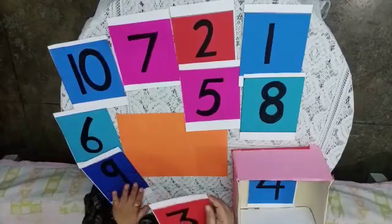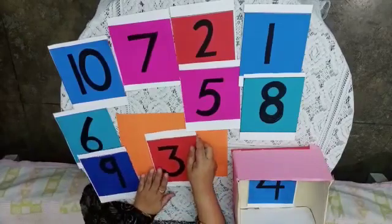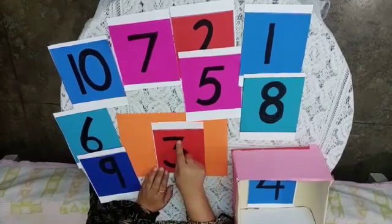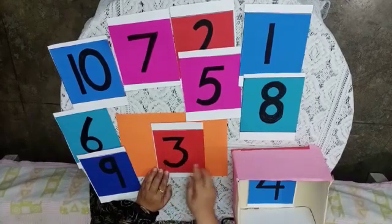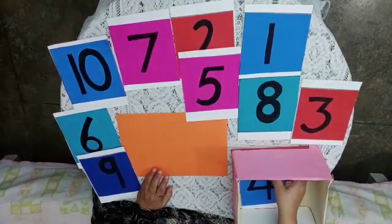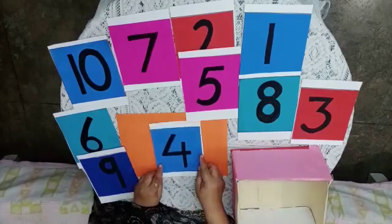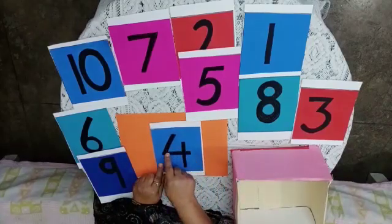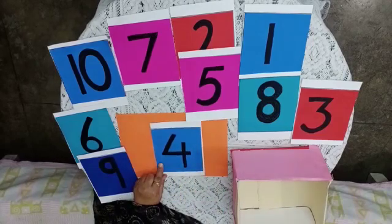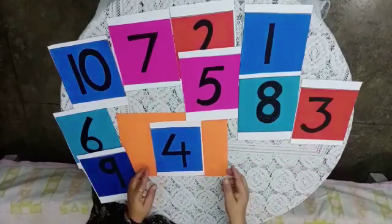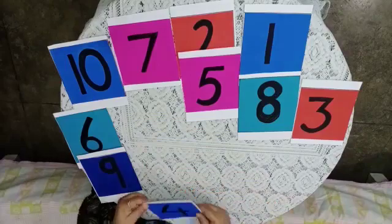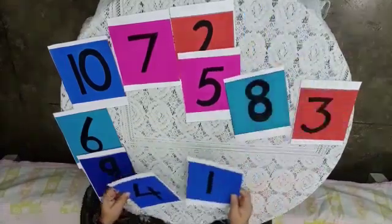And which number is this? This is number 3. There is one more number in the box. Which number is this? Yes, this is 4. Now kids, we will arrange numbers 1 to 10. We will arrange in sequence.